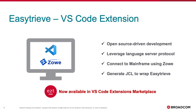You will also have the capability to generate JCLs to wrap around your EasyTreeve program in order to execute on the mainframe. This extension can be installed from the VS Code extensions marketplace with a simple click on the install button — it's ready to be used.